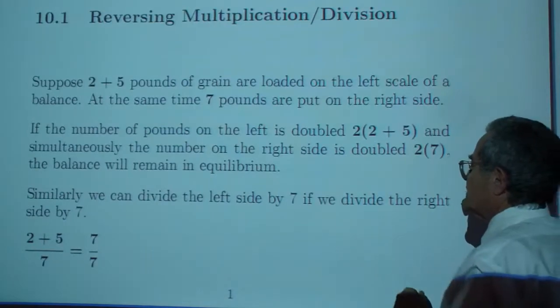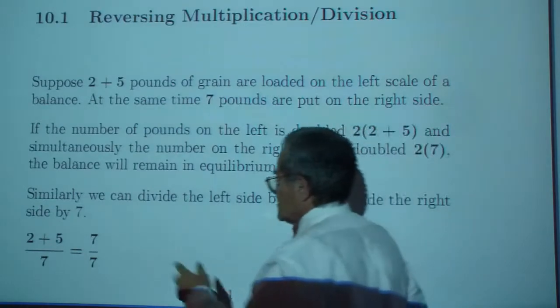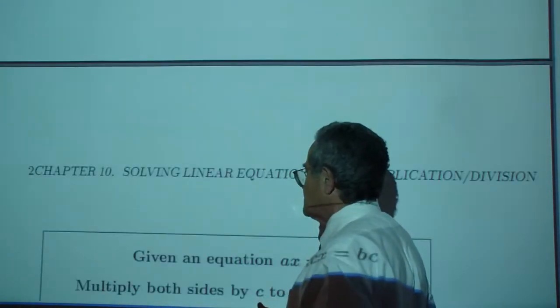Similarly, we can divide the left side by 7 if we also divide the right side by 7. (2 plus 5) over 7 equals 7 over 7, which equals 1.